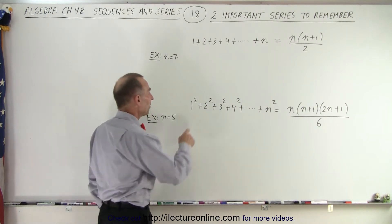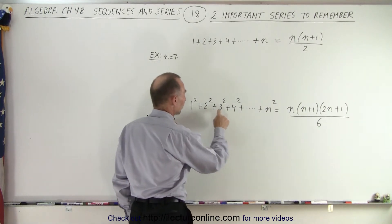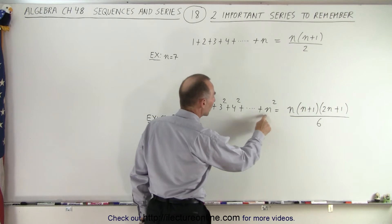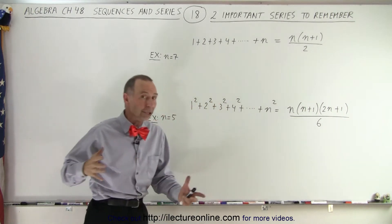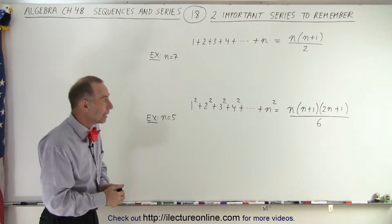Or the series where we have 1 squared plus 2 squared plus 3 squared plus 4 squared all the way up to n squared. Again, n could be any number: could be 3, could be 5, could be 10, could be 20.